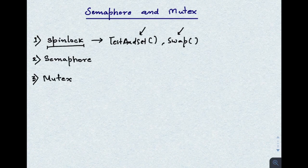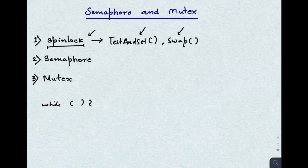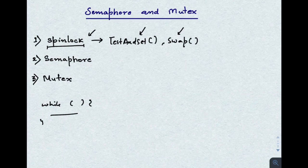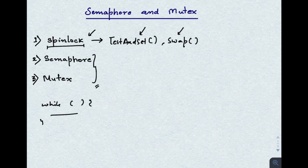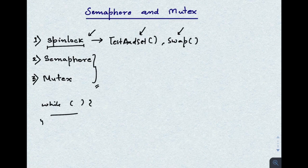I already made my last two videos on test-and-set and swap instructions, and discussed how we can use these hardware instructions to solve the critical section problem. We call that solution a spin lock, because when a process is already in the critical section, the other processes keep waiting in a while loop, wasting CPU time. Semaphore and mutex are different from spin lock — I will explain using an example of a room and a key.